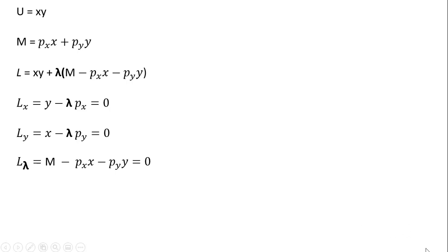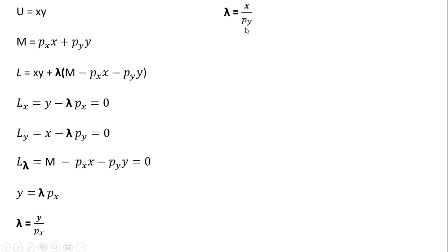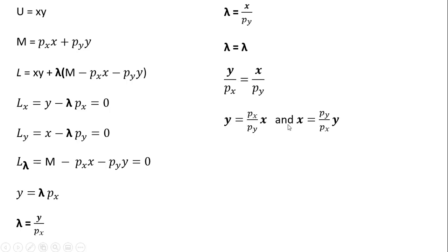From the first two partial derivatives, I'm going to solve for lambda in each. Moving some things around and dividing through by the price of good x gives one expression for lambda. Doing a similar thing for the second partial derivative and solving for lambda gives another. Setting lambda equal to lambda and solving for y, and also solving for x, we get these results.